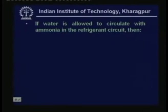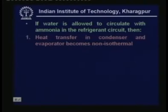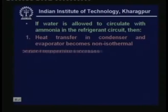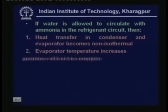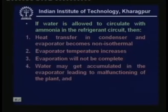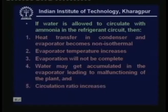If water is allowed to circulate with ammonia in the refrigerant circuit, the problems are: first, heat transfer in the condenser and evaporator becomes non-isothermal; then evaporator temperature increases; evaporation will not be complete; water may get accumulated in the evaporator leading to malfunctioning of the plant; and finally the circulation ratio also increases. All these effects are detrimental to system performance.